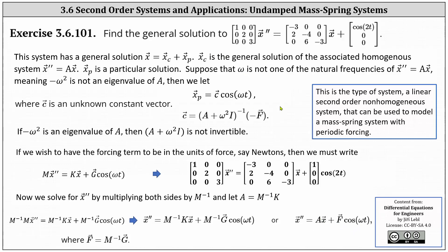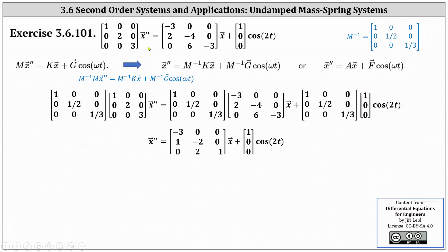Now let's determine the general solution. Our first step is to find the inverse of matrix M, which is a three-by-three diagonal matrix. Because it is diagonal, we find the inverse by taking the reciprocals of the entries along the main diagonal. Multiplying both sides by M inverse and simplifying, M inverse times K times vector x gives the three-by-three matrix with entries negative three, zero, zero; one, negative two, zero; and zero, two, negative one — times vector x — plus M inverse times g, giving the vector one, zero, zero times cosine two t.